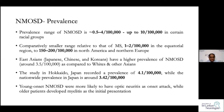Even within the same country, certain racial groups might have a higher prevalence. For example, in Japan, Hokkaido Island is thought to have a higher prevalence of the disease.